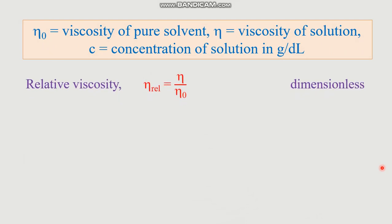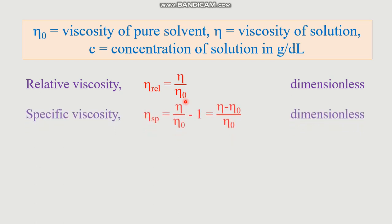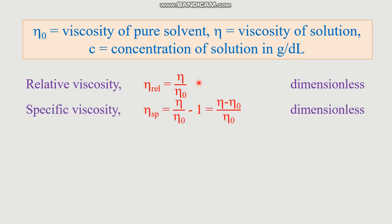The ratio eta over eta-zero is known as relative viscosity. It is dimensionless because it is the ratio of two viscosity coefficient terms. If you subtract one from this ratio — since this ratio is greater than one — the fractional difference is known as specific viscosity. Specific viscosity has the mathematical expression eta over eta-zero minus one, that is (eta minus eta-zero) over eta-zero. This is also dimensionless.